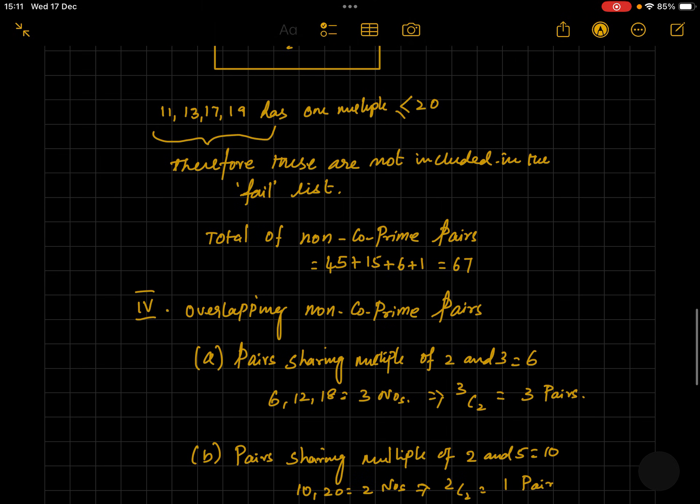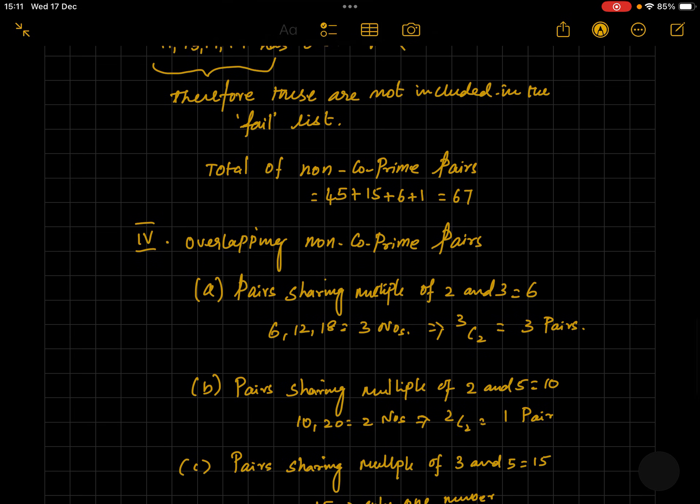However, we have to be cautious in excluding the overlap in non-co-prime pairs. For example, 2 and 3 will share a multiple of 6. So we have to see the multiples of 6 within this given set which are less than or equal to 20. We have 6, 12, and 18. So 3 numbers can make 3C2, which equals 3 pairs.